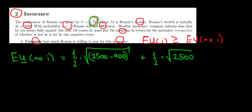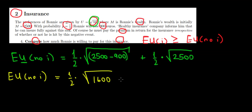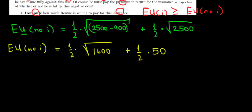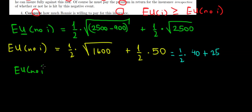Let's work out the math. The expected utility of having no insurance equals (1/2) × √(2,500 − 900) + (1/2) × √2,500. That's (1/2) × √1,600 + (1/2) × √2,500. The square root of 1,600 is 40, and the square root of 2,500 is 50. So we get (1/2)(40) + (1/2)(50) = 20 + 25 = 45. This is our expected utility without insurance.